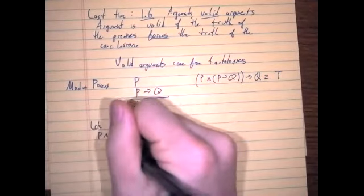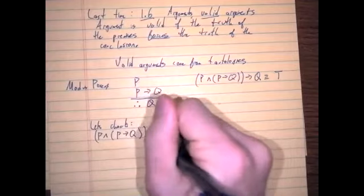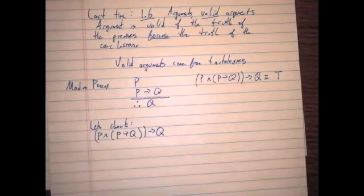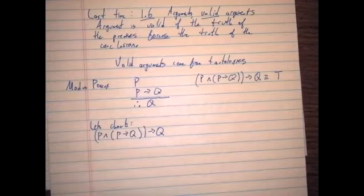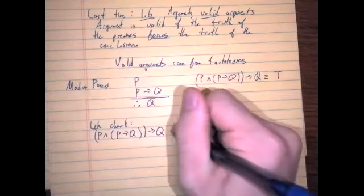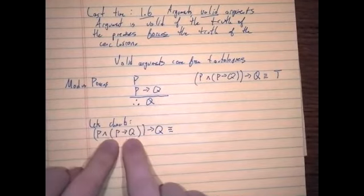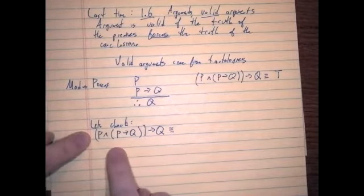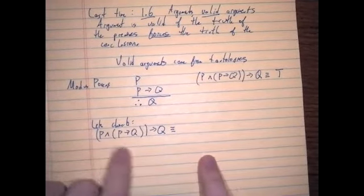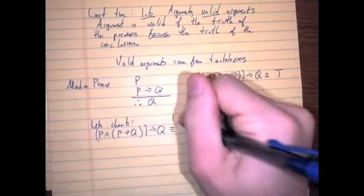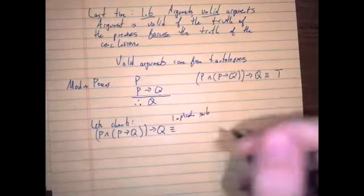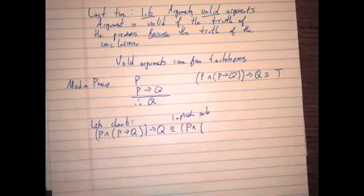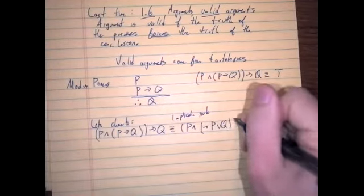So if we have [p and (p implies q)] implies q, what's a good first substitution to make? There are two implications involved. My tendency is to simplify the ones further on the inside first. If I tried to simplify the outer one first, I'd have to negate a statement involving an implication. So by implication substitution, I get [p and (not p or q)] implies q.